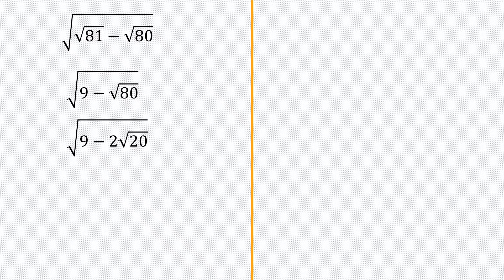For this question, we'll go with 2 root 20. So we have the square root of 9 minus 2 root 20.